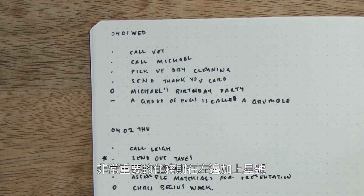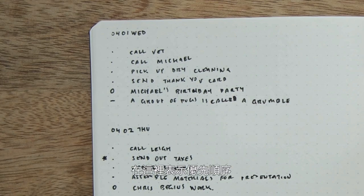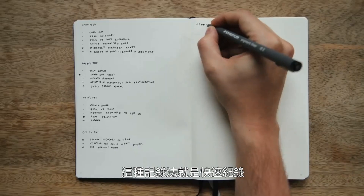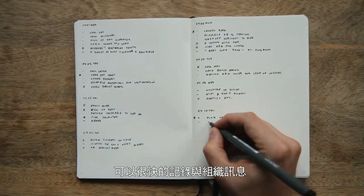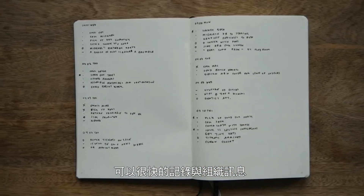If a task is really important, place a little star to the left of it — this is known as a signifier. Signifiers add extra meaning to bullets; in this case, priority. This is known as rapid logging, and it makes capturing and organizing information really fast.